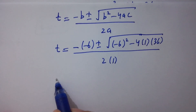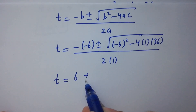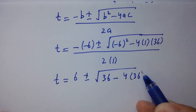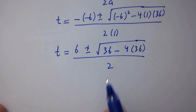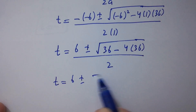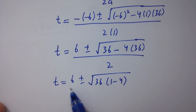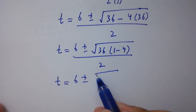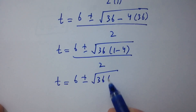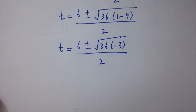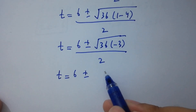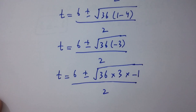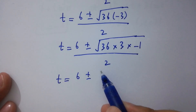Solving, T = (6 ± √(36 × (1 - 4))) / 2 = (6 ± √(36 × (-3))) / 2 = (6 ± 6√3 × i) / 2. So T = 3 ± 3√3·i. These are the complex solutions from Case 1.